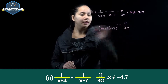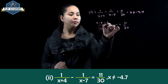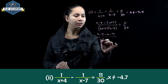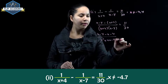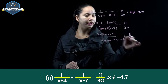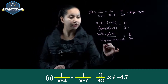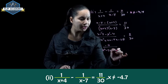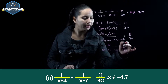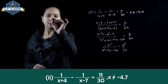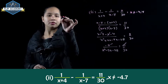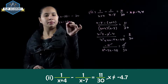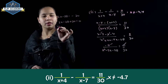Simplifying by taking LCM of x plus 4 and x minus 7: the numerator becomes x minus 7 minus x minus 4, which is minus 11, over x squared plus 4x minus 7x minus 28. This simplifies to minus 11 upon x squared minus 3x minus 28, equals 11 upon 30. The 11s cancel, giving x squared minus 3x minus 28 equals minus 30.